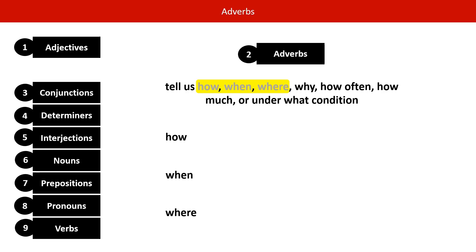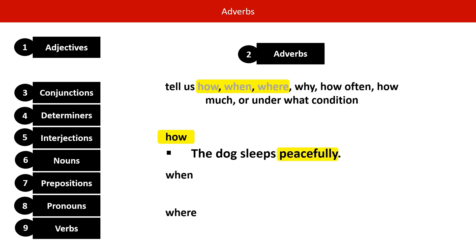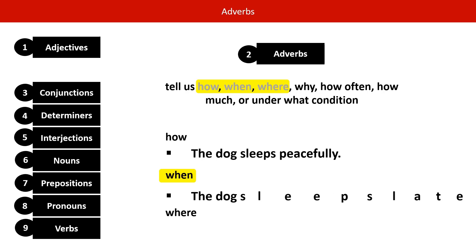Let's start with how: the dog sleeps peacefully. Peacefully is our adverb and it modifies the verb sleeps to tell us how the dog sleeps. Next, let's look at when: the dog sleeps later. Later is our adverb and it modifies sleeps to tell us when.